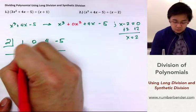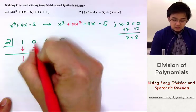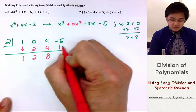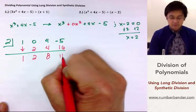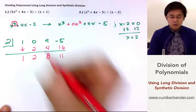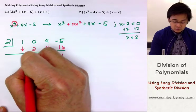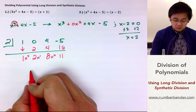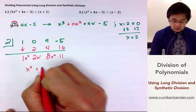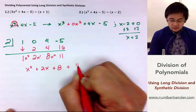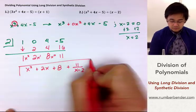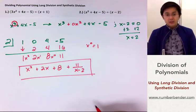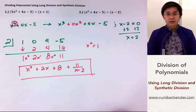We bring down the first term, then: 1 times 2 is 2, 0 plus 2 is 2, 2 times 2 is 4, 4 plus 4 is 8, 8 times 2 is 16, and negative 5 plus 16 is positive 11. Since the highest exponent in our original polynomial is cubed, our answer will have a highest exponent of 2, then 1, then 0, and the remainder. So our final polynomial is x squared plus 2x plus 8 plus 11 over x minus 2 — since x raised to 0 equals 1, and 8 times 1 is simply 8. This is how we use synthetic division and long division in dividing polynomials of this form.